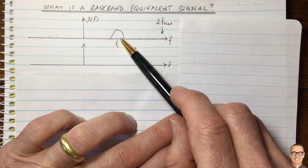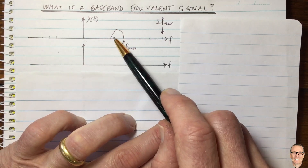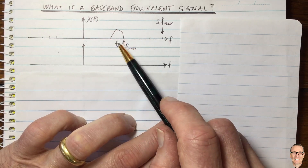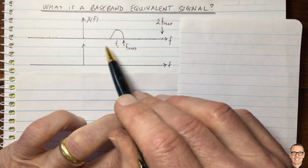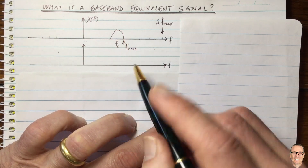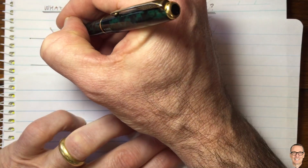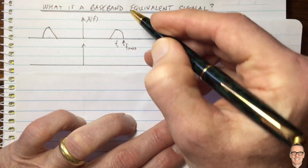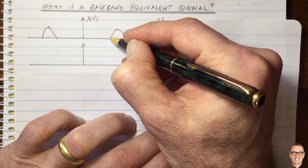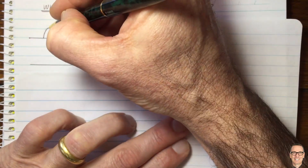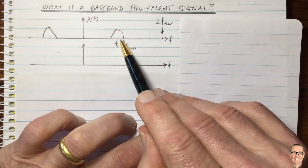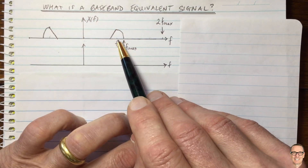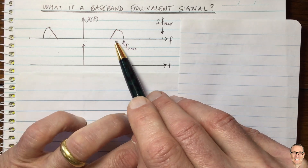A key property of Fourier transforms is that if a signal is real, then its Fourier transform is symmetric. We're going to be considering real signals here, so this is a symmetric function. The example shape drawn here has a straight line that is symmetric, confirming it is a real signal. These are the ones we're interested in, of course, because they're really sending signals in the passband.